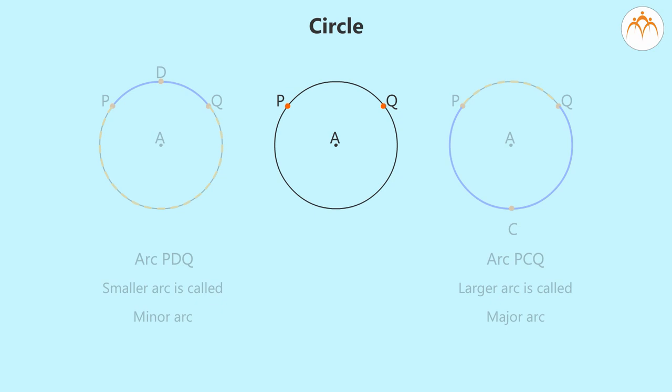Observe that if we fix two points on a circle, then the minor and major arcs so formed cover the whole circle.